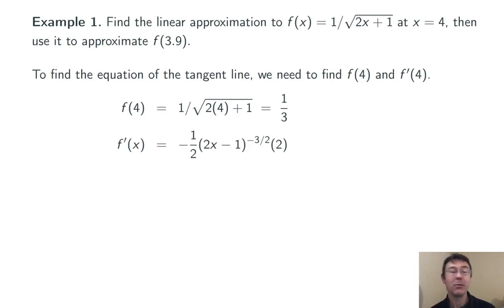Now we need to find f prime of 4. So first let's find f prime. We're viewing the 1 over square root of 2x plus 1 as 2x plus 1 to the negative 1 half. Then I differentiate that using the chain rule: negative 1 half times 2x plus 1 to the negative 3 halves times the derivative of the inside, so times 2. And that all simplifies to negative 1 over 2x plus 1 to the 3 halves. Plugging in x equals 4 and simplifying, we get negative 1 over 27.